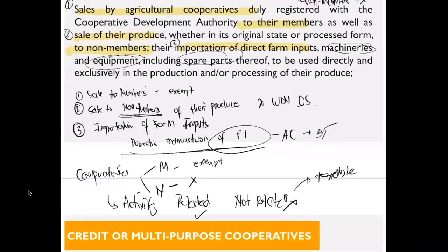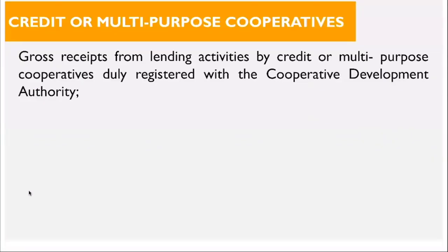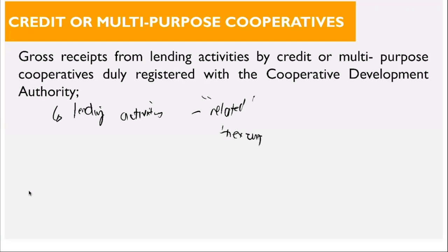Letter M covers credit or multipurpose cooperatives. Gross receipts from lending activities by credit or multipurpose cooperatives duly registered with the CDA are exempt. Lending activities are considered related to the cooperative's purpose, therefore exempt. The general rule for cooperatives: sales to members are exempt; sales to non-members depend on whether the provision provides for exemption; related activities are exempt; unrelated activities are taxable.